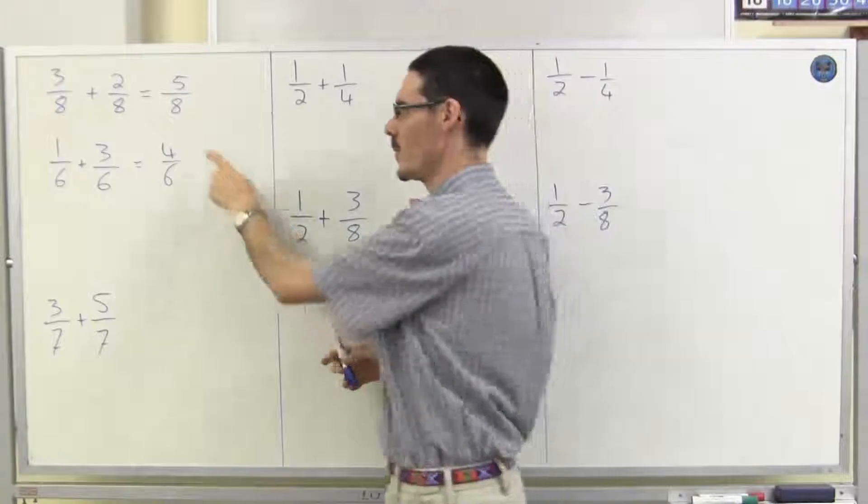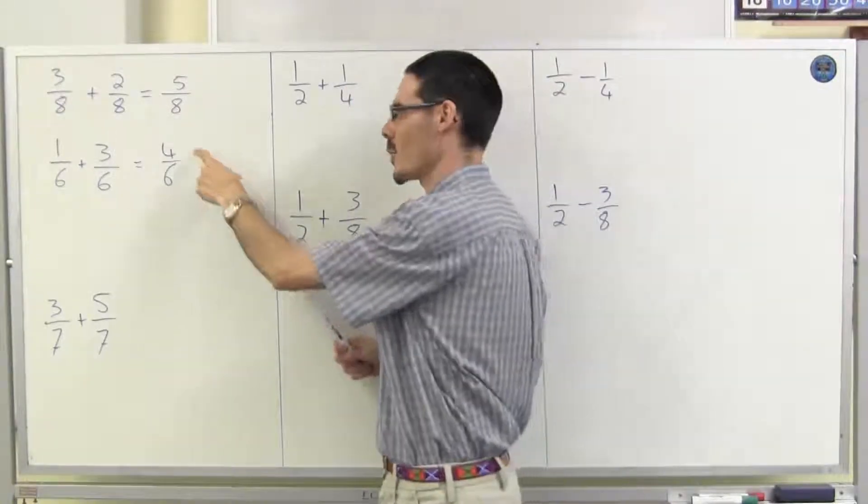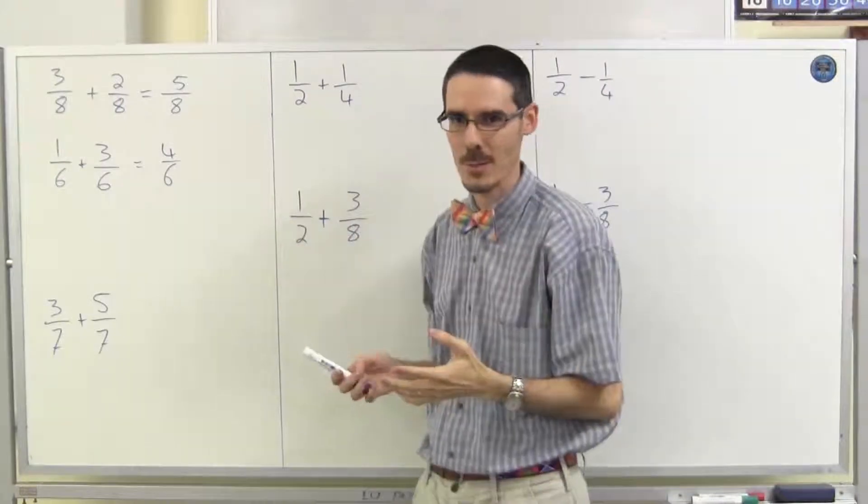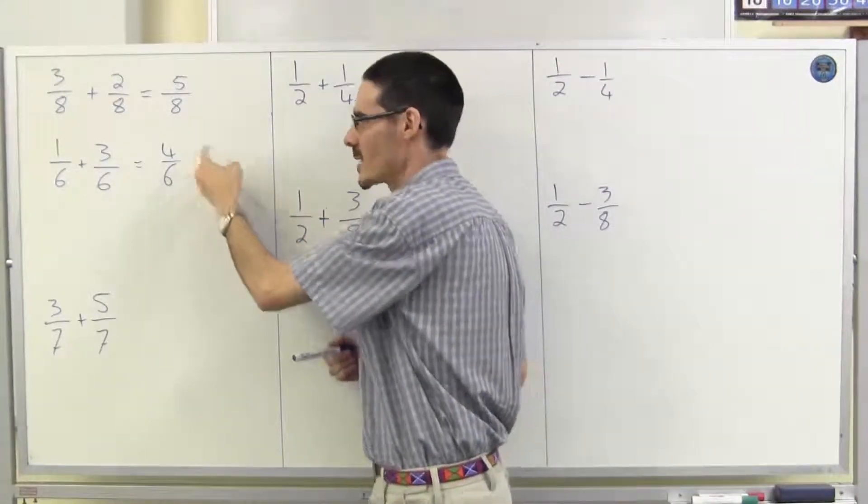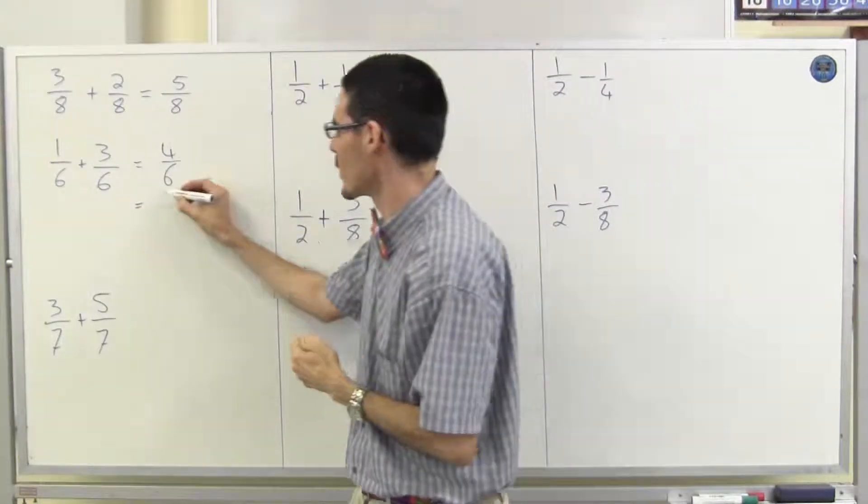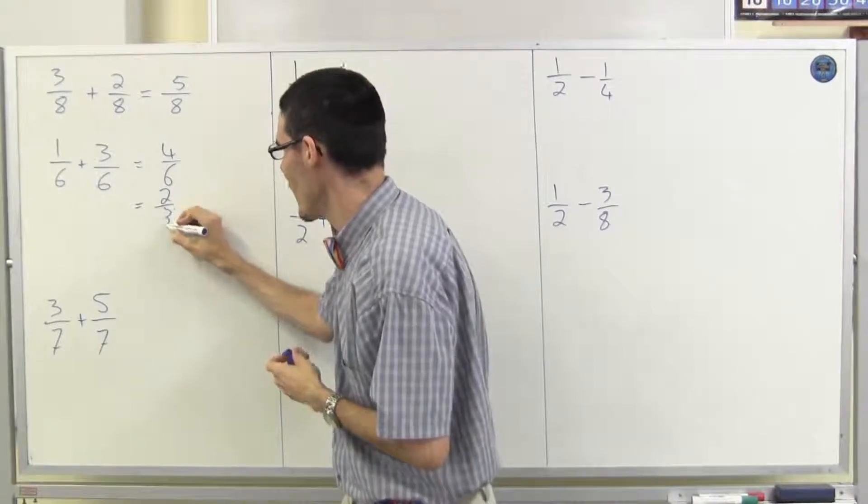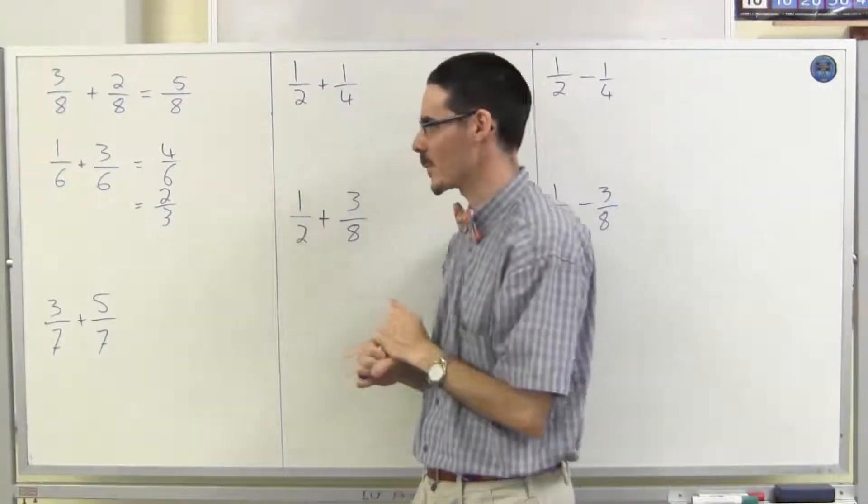But wait a minute. Four and six are both even numbers. I can divide the top and the bottom by the same number, two. Any time you have a fraction where it's not in simplest form, you need to see if you can turn it into simplest form. Divide the top by two and the bottom by two. Now I've got an answer in simplest form.